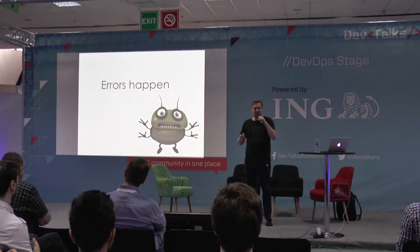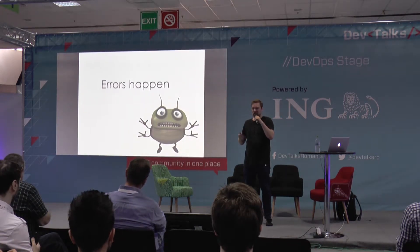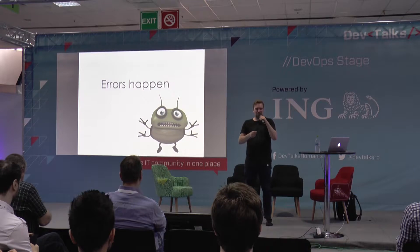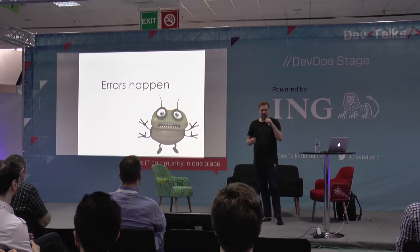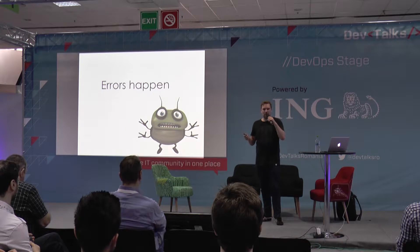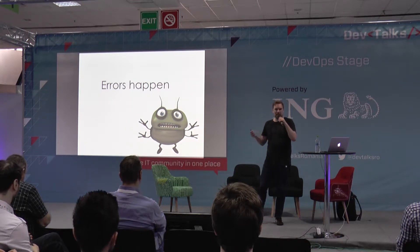That means errors will happen at some point — you can't really get around that. So you can test a lot. You can get a testing and quality culture in place. But at some point, there are going to be bugs live on the platform.